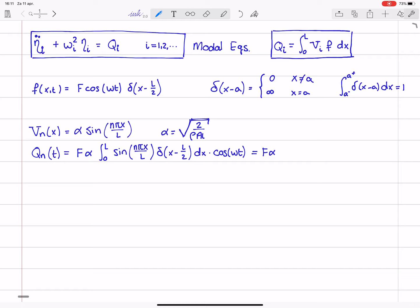can be written as f times alpha times the sine, and then if we substitute for x L over 2, we just have n pi divided by 2 times the cosine of omega times t.